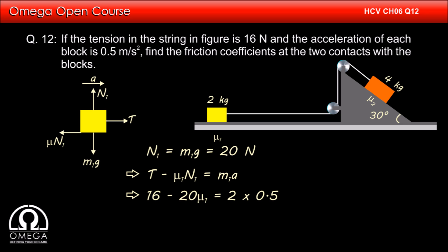As per the question, tension in the string is 16 newtons. We have calculated N₁ to be 20 newtons and the acceleration is 0.5 meter per second square. Putting these values, we get 16 minus 20μ₁ is equal to 2 into 0.5 which implies 20μ₁ is equal to 15 or μ₁ is equal to 15 by 20 that is 0.75. This is our answer.